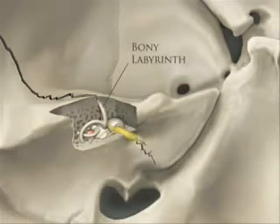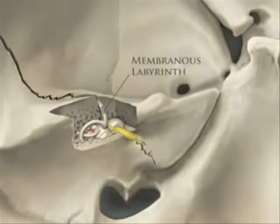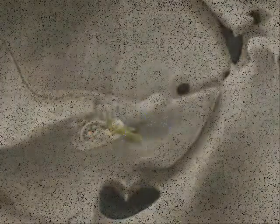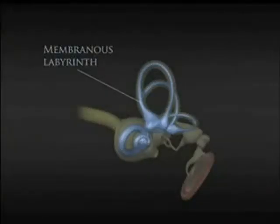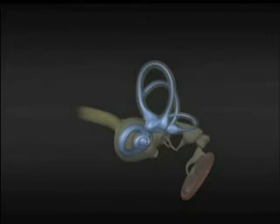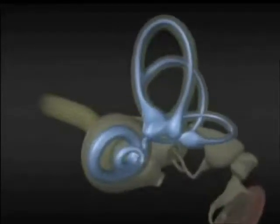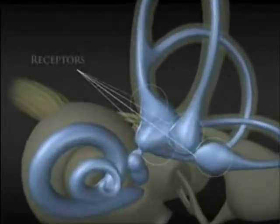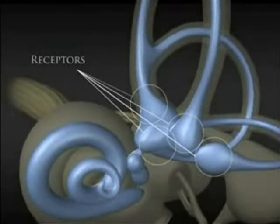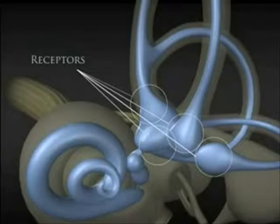The bony labyrinth encloses the membranous labyrinth located within the semicircular canals. This is the organ responsible for our sensitive fluid, the endolymph. These changes would stimulate the receptors responsible for equilibrium, thus resulting in an altered sense of balance.